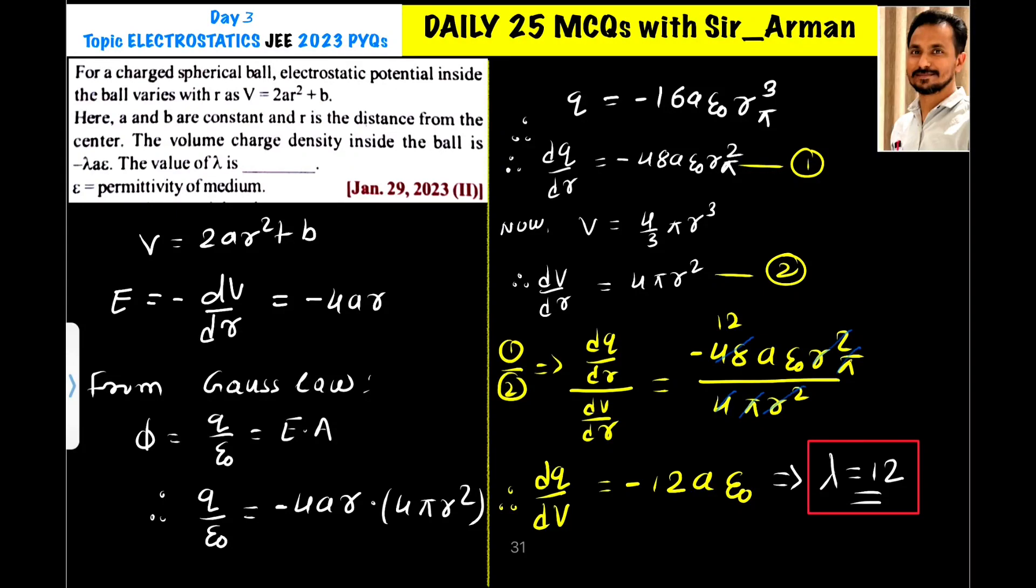For a charged spherical ball, electrostatic potential inside the ball varies with R as V equals 2AR² plus B.